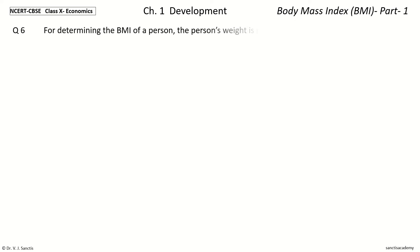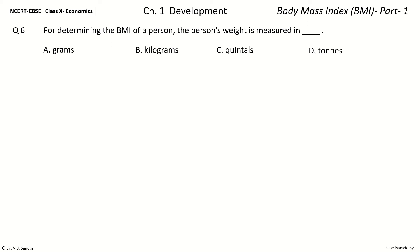Question 6: For determining the BMI of a person, the person's weight is measured in dash. The options are: Grams, Kilograms, Quintals, Tons. And the answer is Kilograms. So for determining the BMI of a person, the person's weight is measured in kilograms.